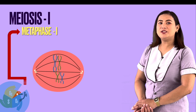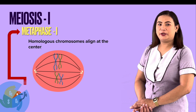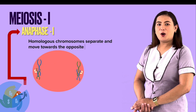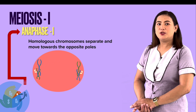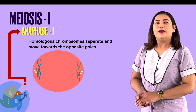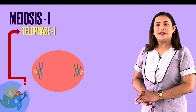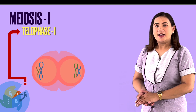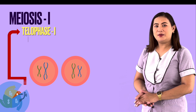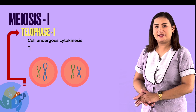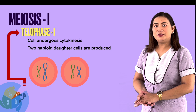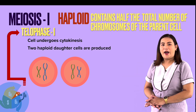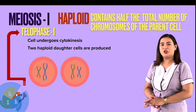In metaphase 1, the synapsed homologous chromosomes align at the center. During anaphase 1, homologous chromosomes begin to separate randomly to the opposite poles of the cell. In telophase 1, the cell undergoes cytokinesis, dividing the cytoplasm of the original cell into two daughter cells. Each daughter cell is haploid and has only one set of chromosomes, or half the total number of chromosomes of the original cell.